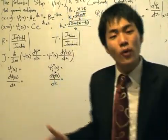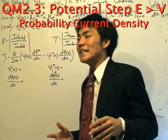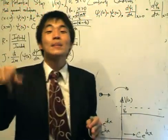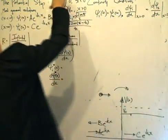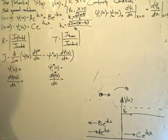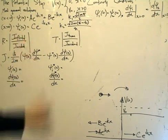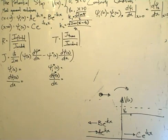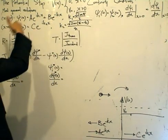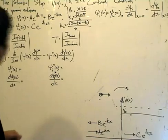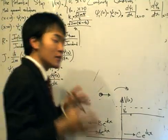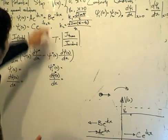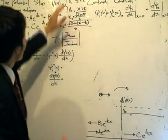Hi everyone, let's not waste time and continue our study on the potential step, investigating the reflection and transmission coefficients to explain the funny quantum behavior at the potential step. The potential step is given, and I've written out the general solutions as psi1 and psi2. Psi1 is a linear combination of e to the ik1x and e to the minus ik1x. Psi2 is c multiplied by e to the ik2x. I've already eliminated the solution d times e to the minus ik2x. k1 and k2 are the wave numbers given by those expressions.